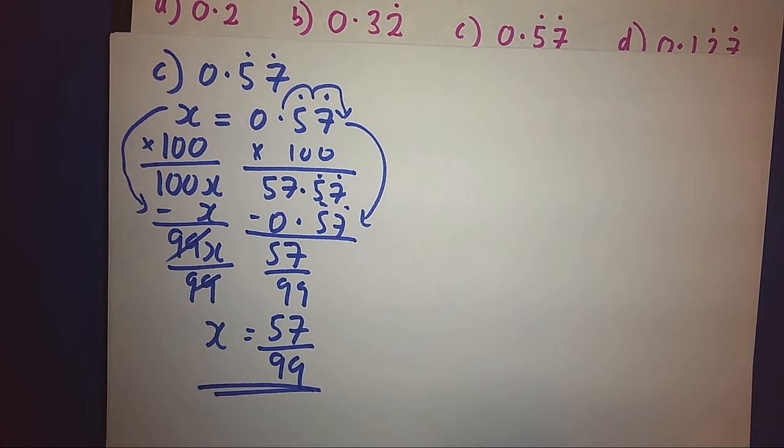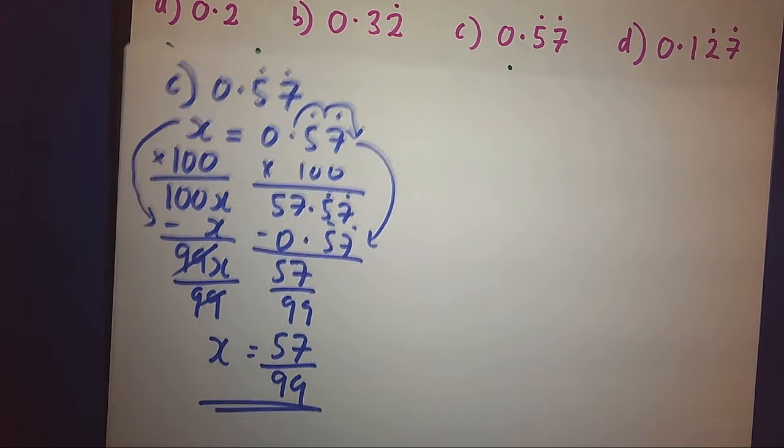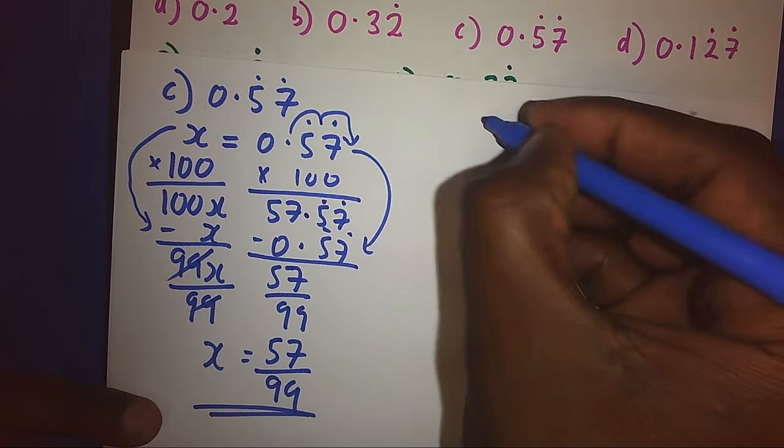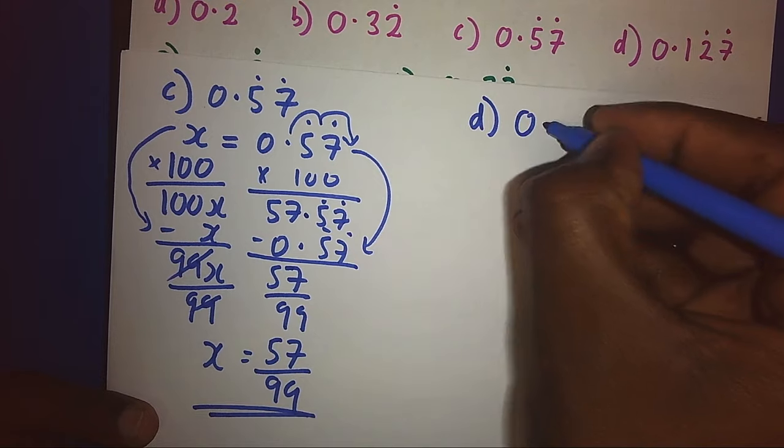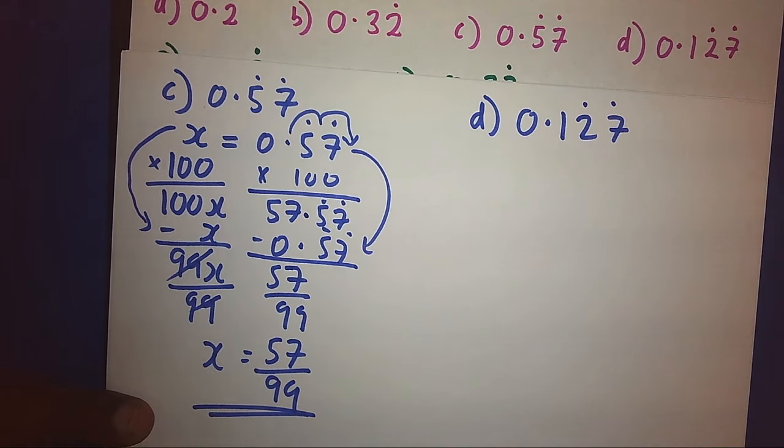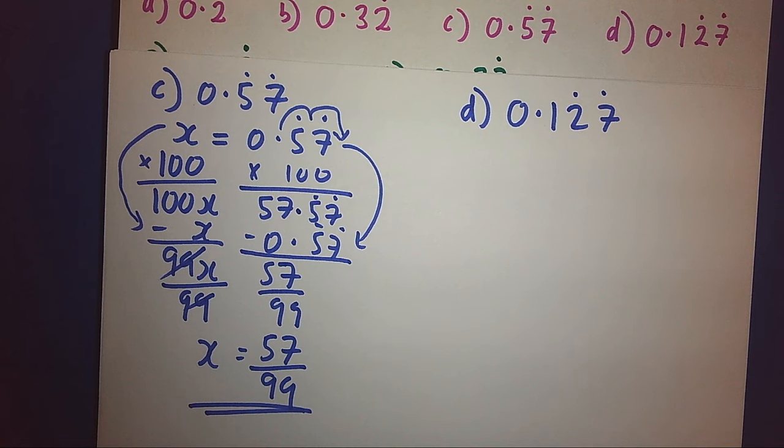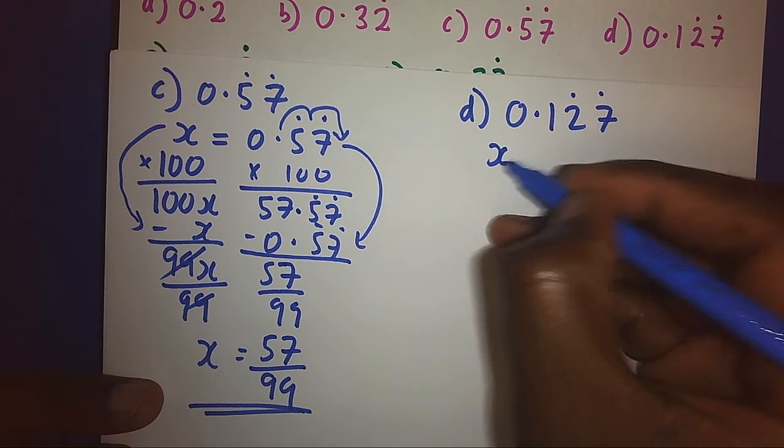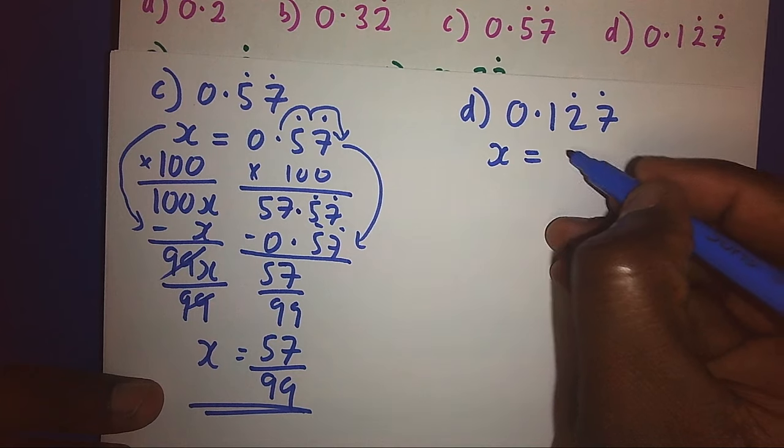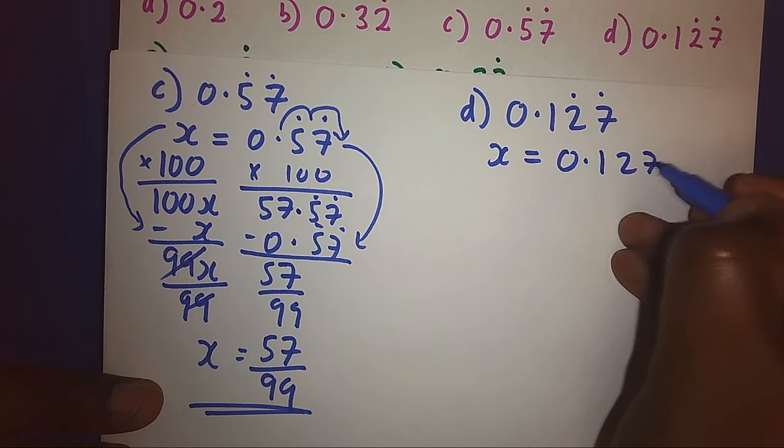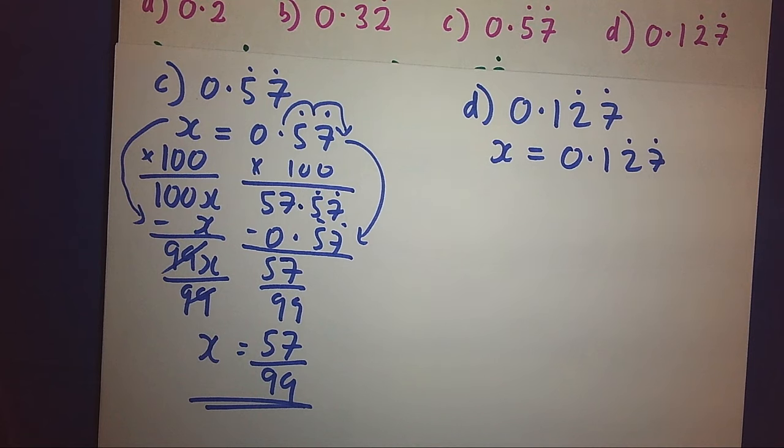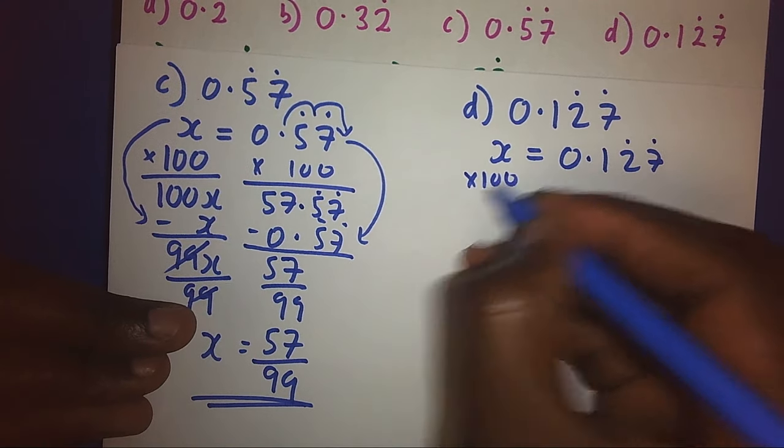Next, we have part D. Part D is 0.127. Again, also part D, two numbers are recurring, meaning we have to multiply by 100. So first we shall let x be equal to 0.127, and we can see two numbers are recurring, meaning we shall multiply by 100. So times 100, we get 100x.